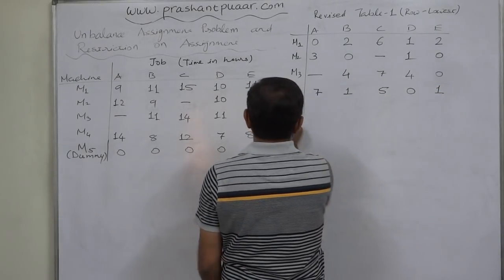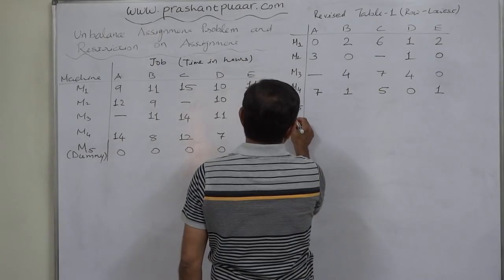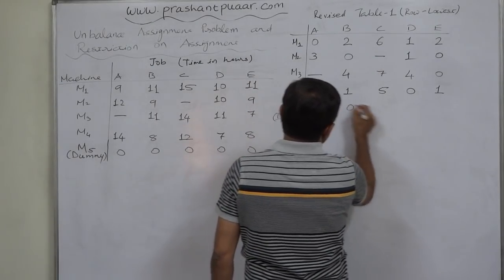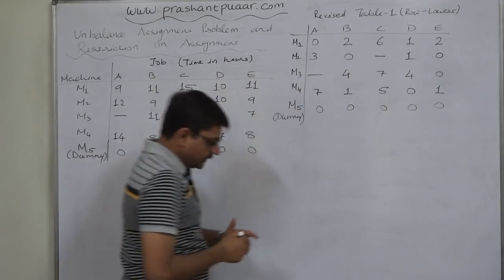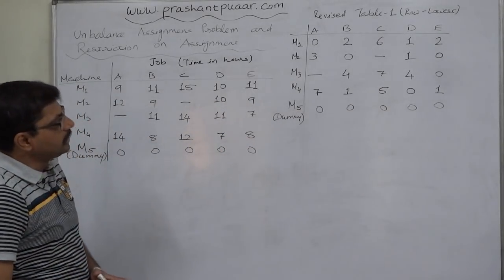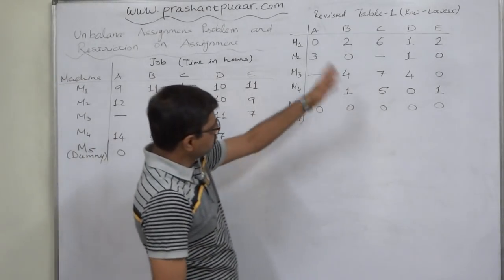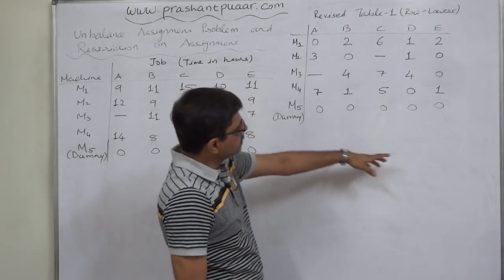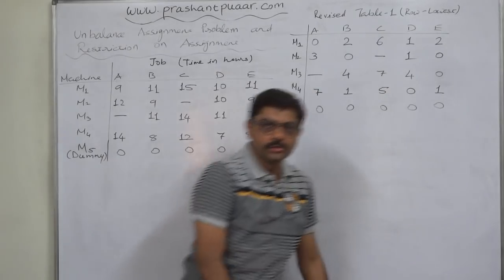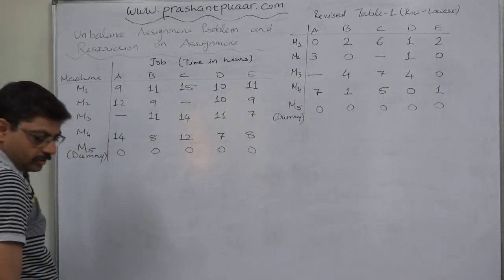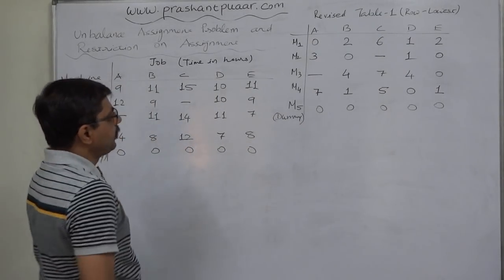In row 5, that is dummy. All are zeros. Now, check whether all the columns and all the rows are with at least one zero. Yes. In all columns, there is at least one zero and in all row also, there is at least one zero. So now we are ready for assignment.